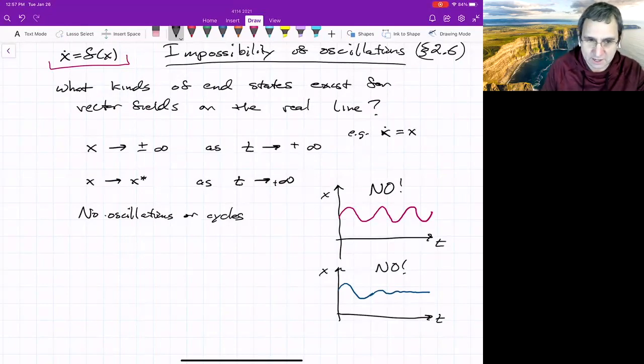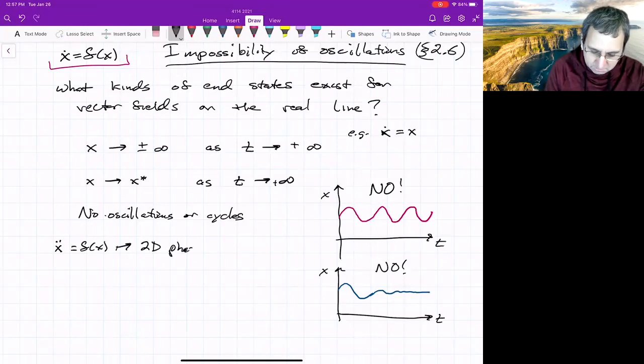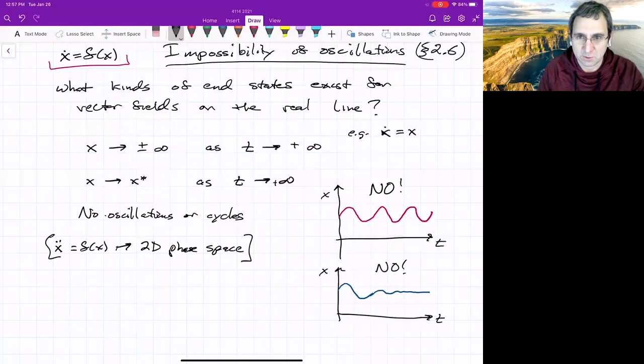Yeah. So the simple harmonic oscillator, if you think of mass times acceleration, it's an x double dot equals some f of x. So it's actually a 2D phase space. So it doesn't fall into this category that we've talked about so far.